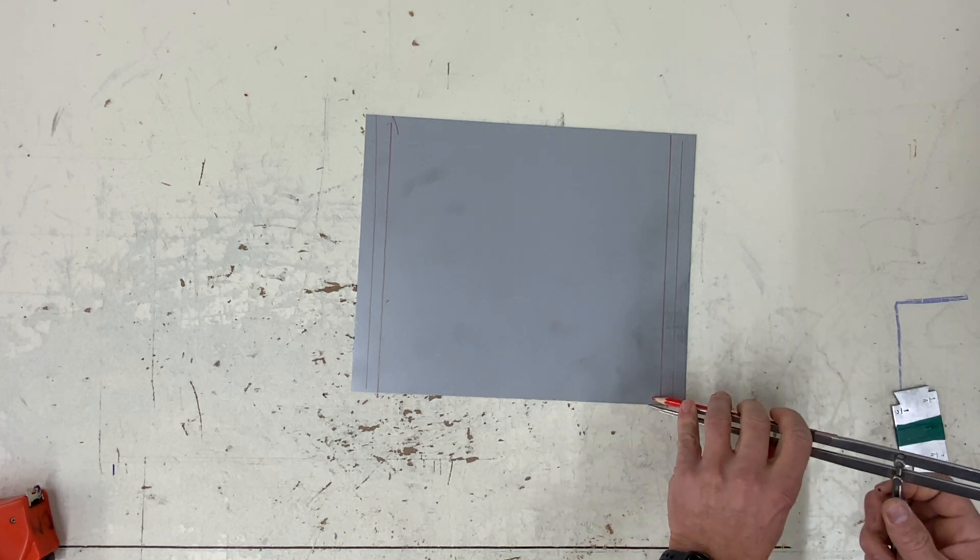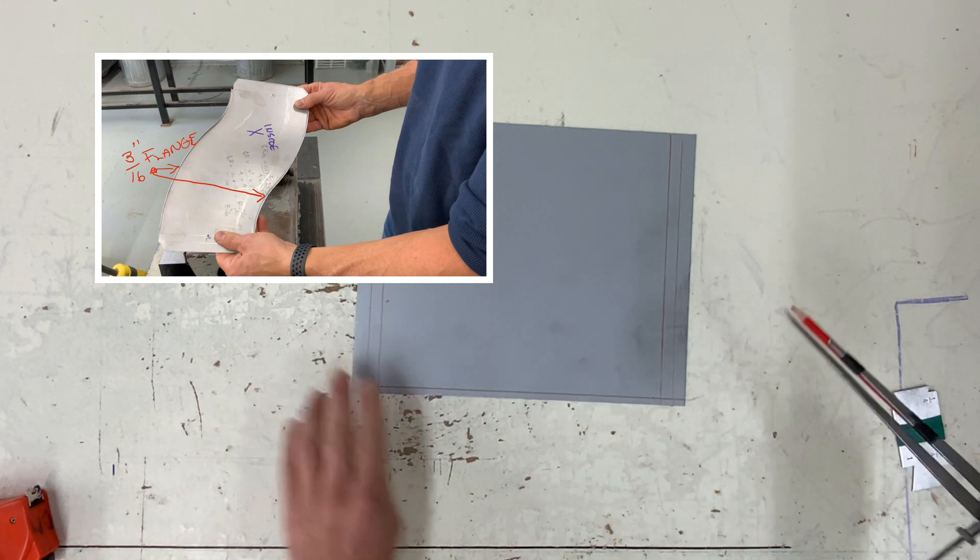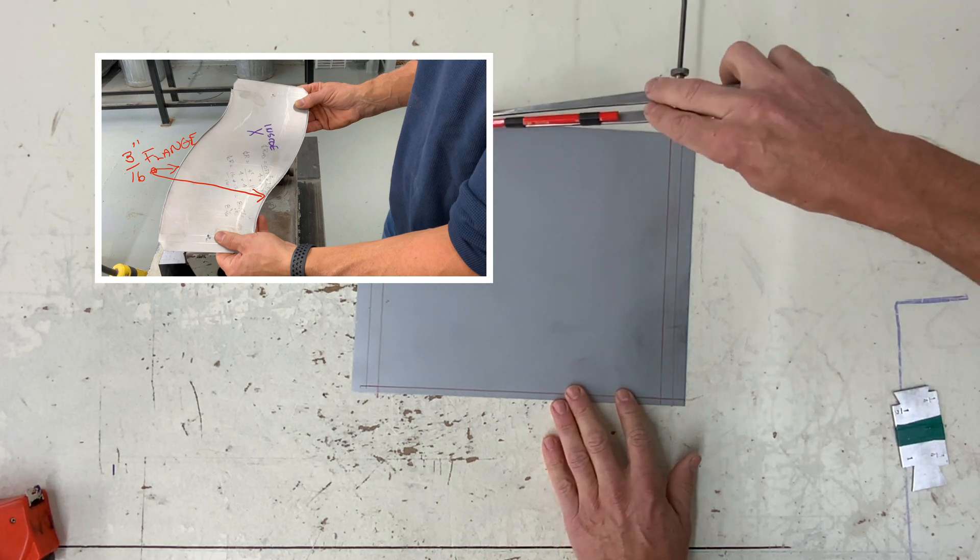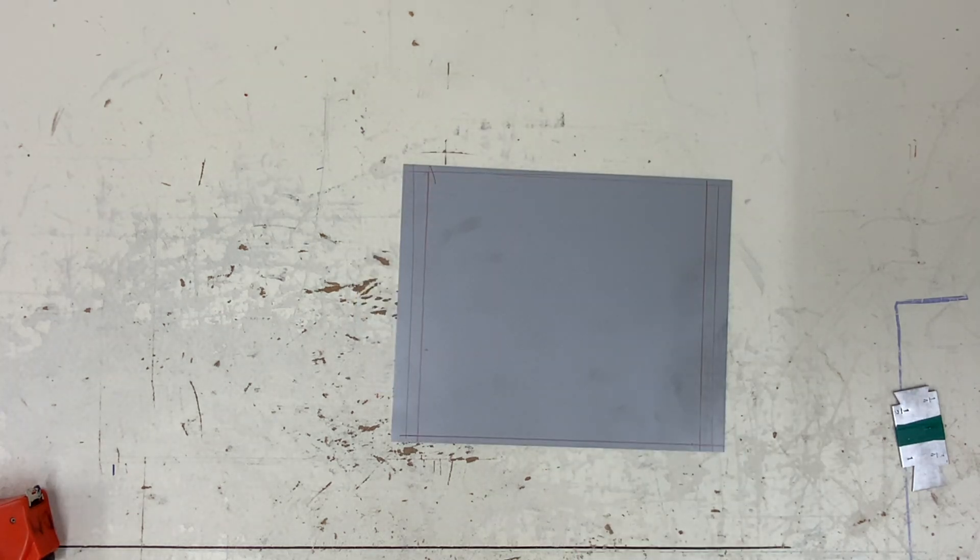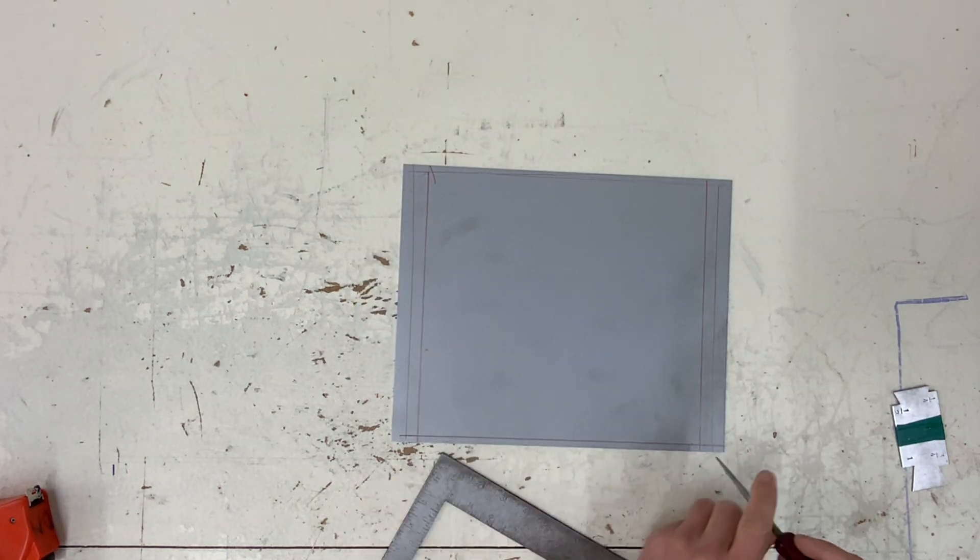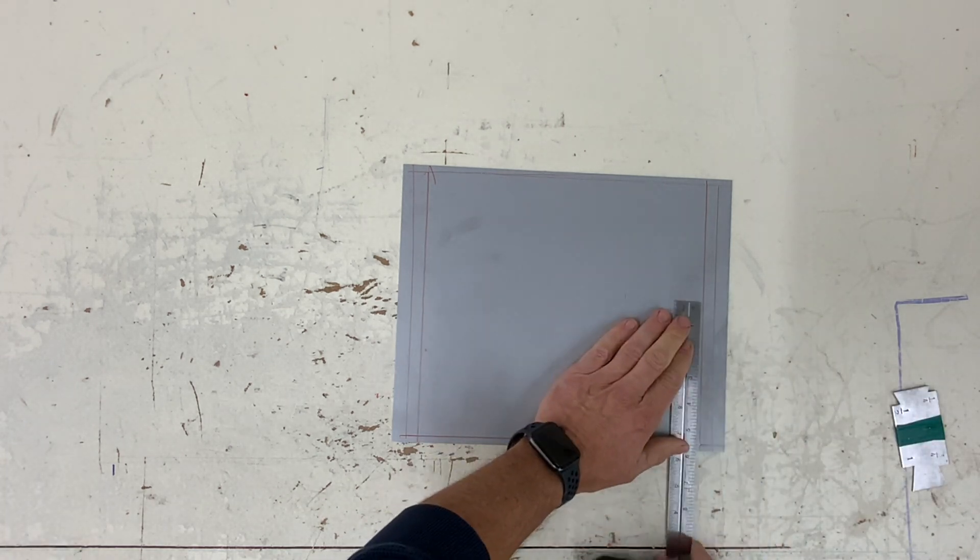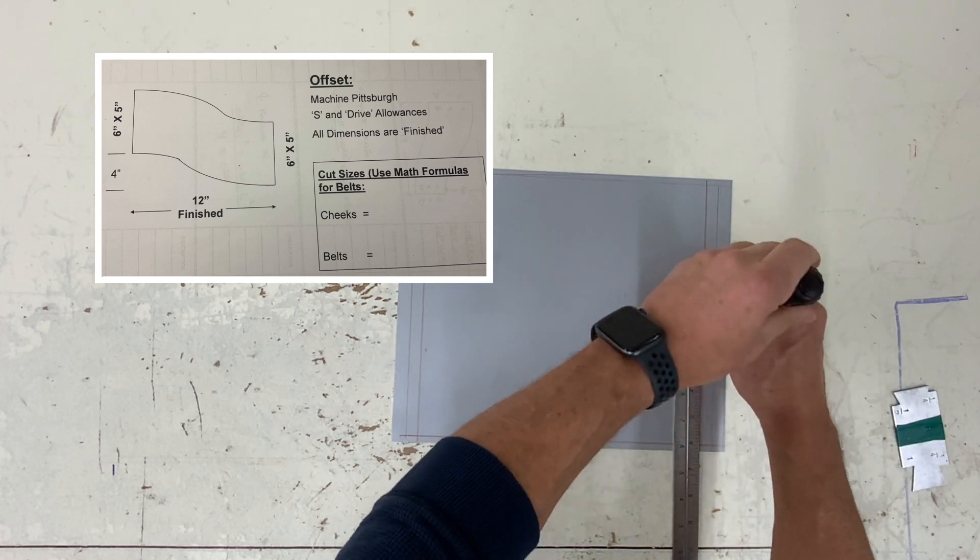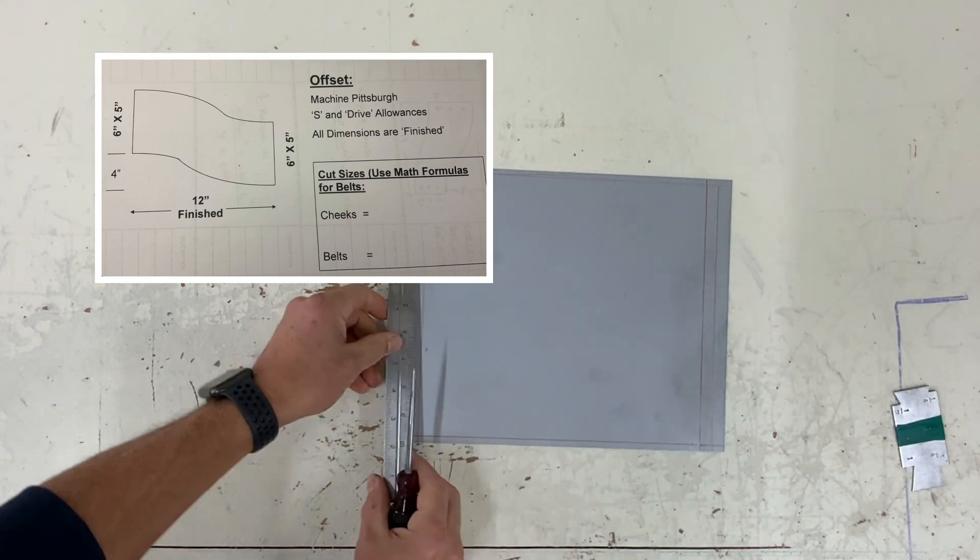This is for the edge or a flange that we will be using to insert inside the male part of a Pittsburgh lock. I'm adding a quarter inch, but it actually takes three-sixteenths. So right now let's plot in our duct dimensions. And here you can see it is six. The cheeks are six inches wide on both ends.